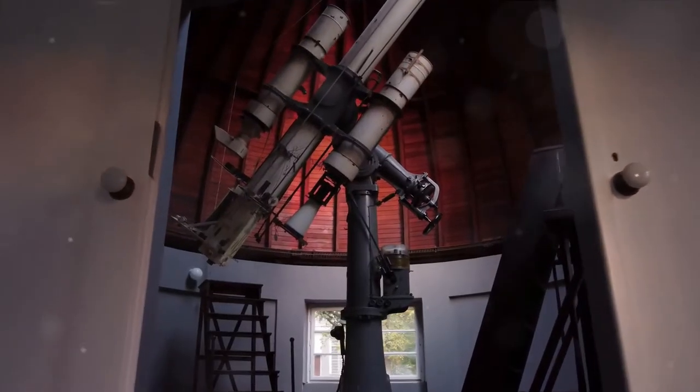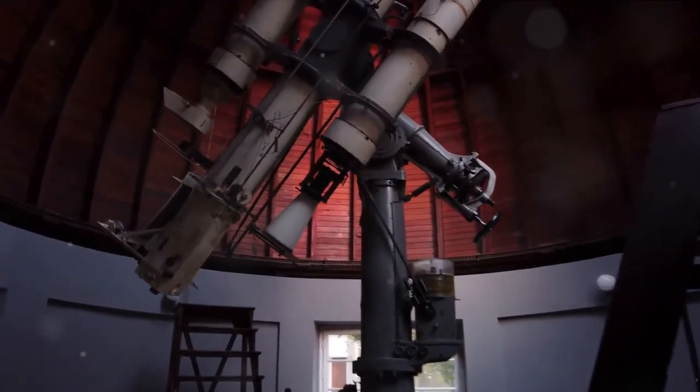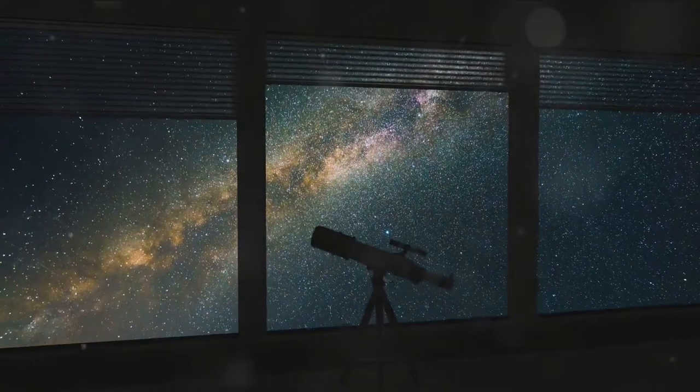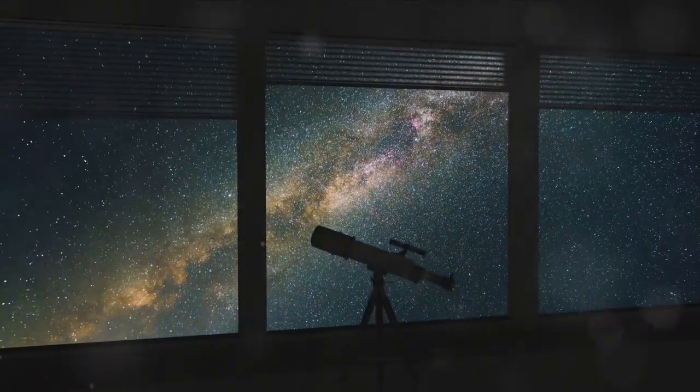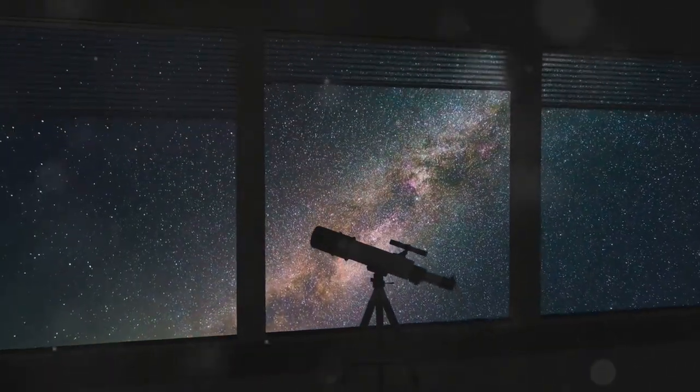The 19th century saw the advent of the reflecting telescope, a design that uses a large curved mirror to collect light and form an image. This advancement allowed astronomers to observe fainter and more distant objects, opening new chapters in our understanding of the stars.